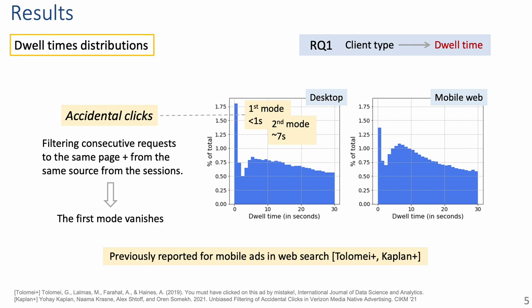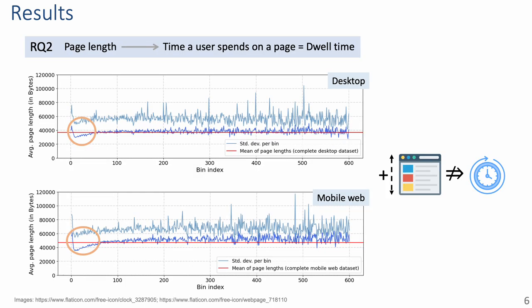What is perhaps surprising here is to observe the same behavior for desktop too. Regarding the second research question, we analyzed the duration of dwell times and the size of the pages where these were measured. Again, the pattern is the same regardless of the access method. Namely, there is an initial peak closely after 0 seconds given by accidental clicks, followed by a steady increase until reaching roughly 60 seconds, and after that the page length oscillates. This means that it is only the case for dwell times shorter than a minute that the longer the dwell time, the bigger in size are the pages being accessed. This may be what one would intuitively expect, but it is not true in general for either of the device types we have analyzed.